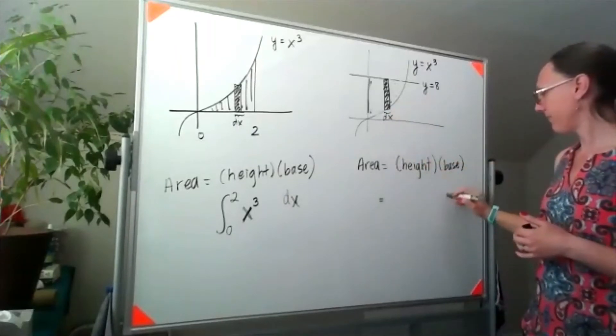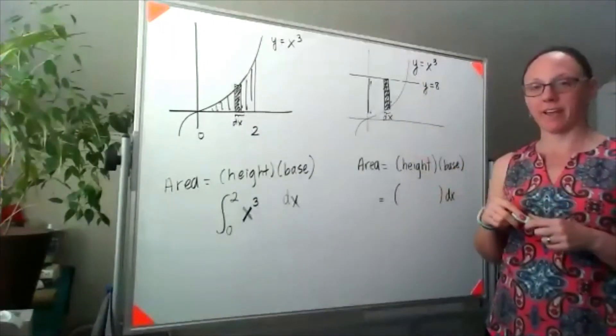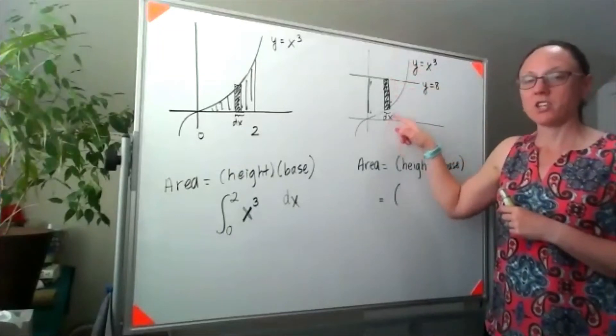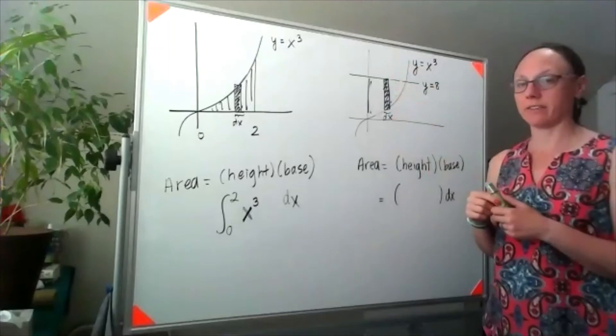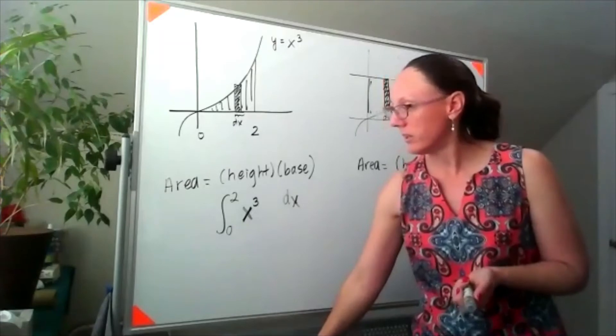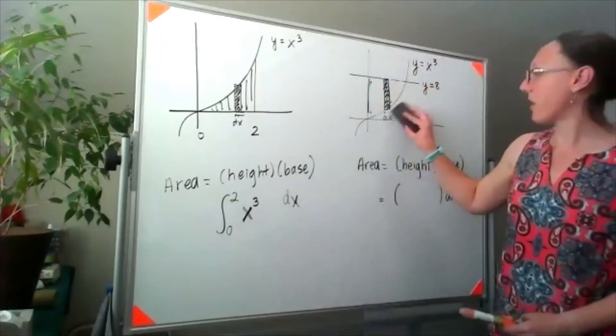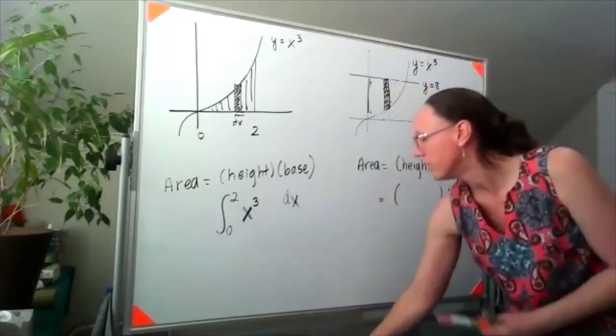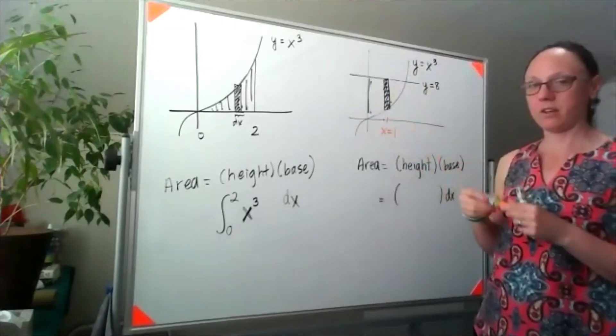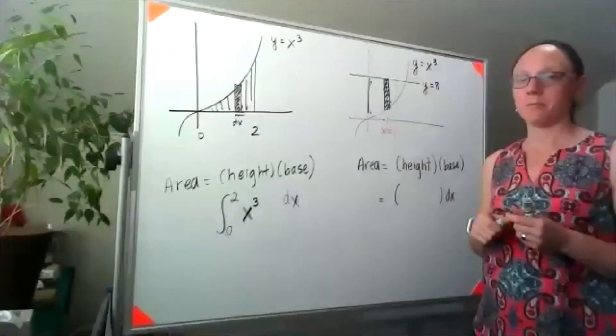But now the height of my rectangle doesn't come all the way down here to touch the axis. If I'm looking for the height of this rectangle, and if I told you that I had chosen my arbitrary cross section rectangle to be at an x value of 1, could we figure out the height of this rectangle?